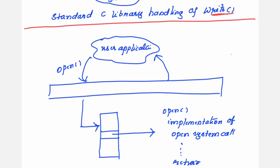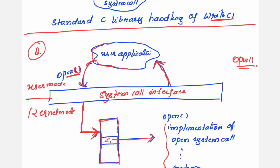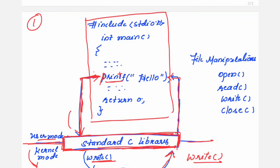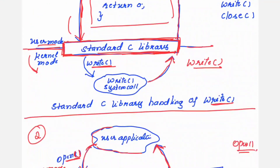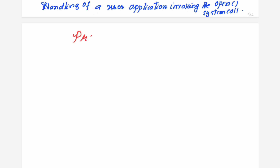There is one more illustration: the standard C library handling the write system call. Under file manipulation, we have the open system call. The user application includes the open system call in the program. The system call interface intercepts this system call and fetches the complete implementation of the open system call, then returns to the user application. So a system call can also be directly used in the user program, and the interface fetches its implementation from the kernel.